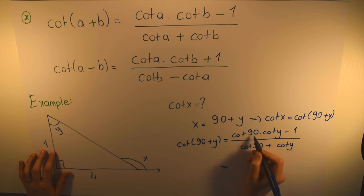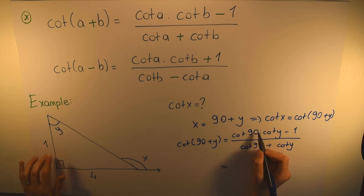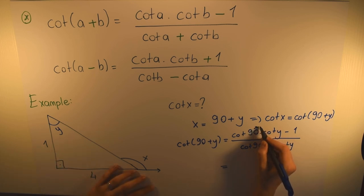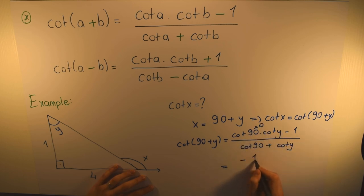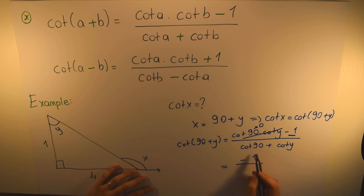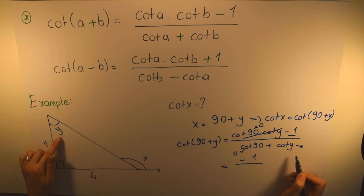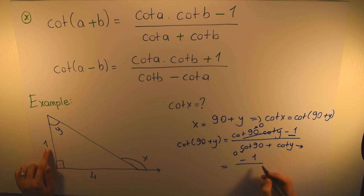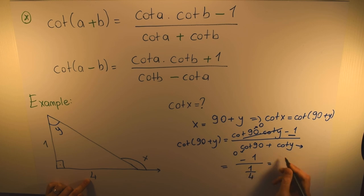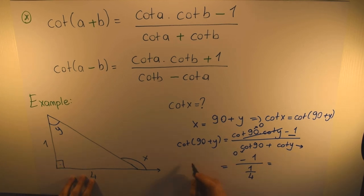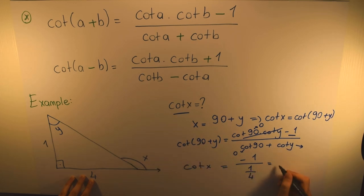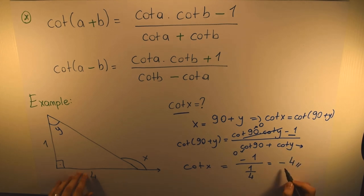Cotangent(90+y) = (cotangent 90 · cotangent y − 1) / (cotangent 90 + cotangent y). Since cotangent 90 = cos 90 / sin 90 = 0, the numerator becomes 0 · cotangent y − 1 = −1, and the denominator becomes 0 + cotangent y = cotangent y. Cotangent y = adjacent/opposite = 1/4, so cotangent x = −1 / (1/4) = −4.